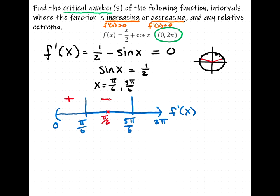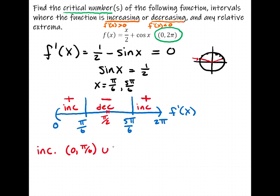From 5π/6 to 2π — that part of the unit circle — you're again taking 1/2 minus a value less than 1/2, so the derivative is positive there. Therefore the function is increasing on (0, π/6) and (5π/6, 2π), and decreasing on the middle interval (π/6, 5π/6).